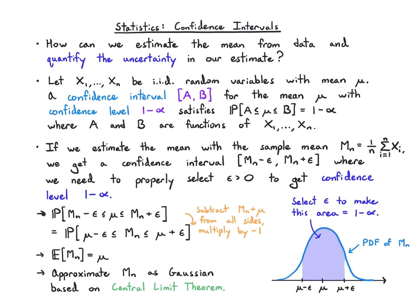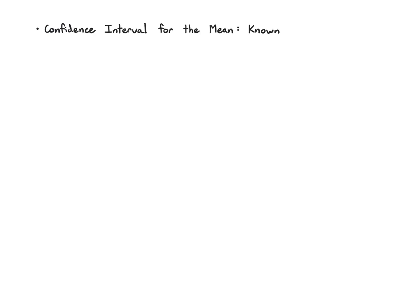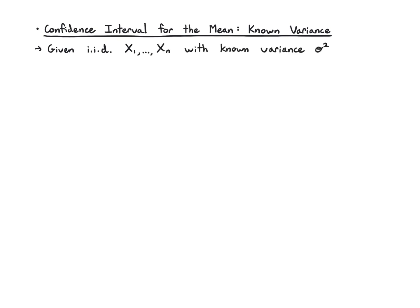We're assuming that the sample mean follows a Gaussian centered at mu and we want to select epsilon to make this area 1 minus alpha. The numbers to have in mind for 1 minus alpha are something like 0.95 or 0.99 — so 95% or 99% confident that the sample mean interval captures the true mean. The first case we'll build a confidence interval for is when we believe we know the variance in advance — this sometimes happens. We have IID data and we believe the variance to be sigma squared, and we want a confidence interval with confidence level 1 minus alpha.